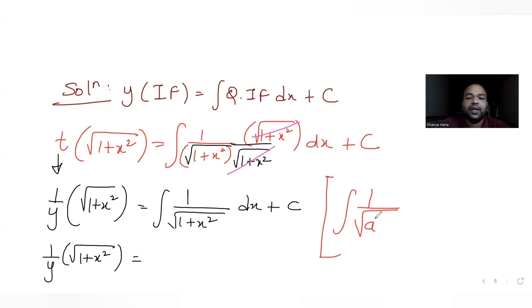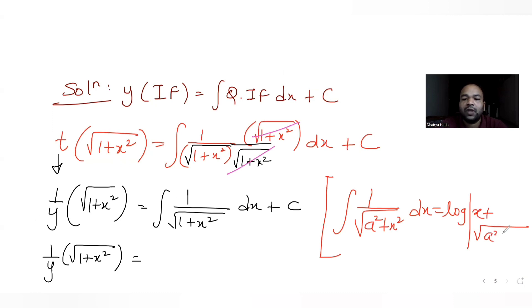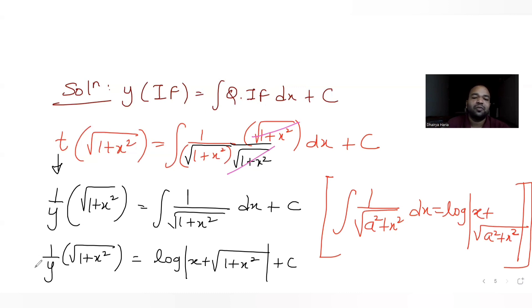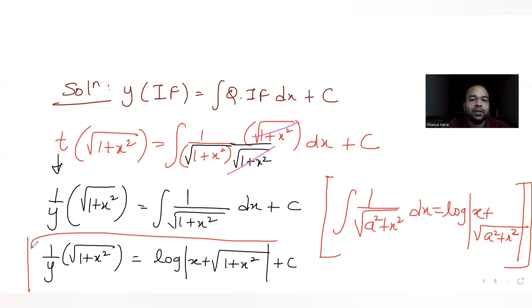Evaluating the integral: ∫1/√(1 + x²) dx = ln|x + √(1 + x²)|. So the solution of the curve is: (1/y)·√(1 + x²) = ln|x + √(1 + x²)| + C.